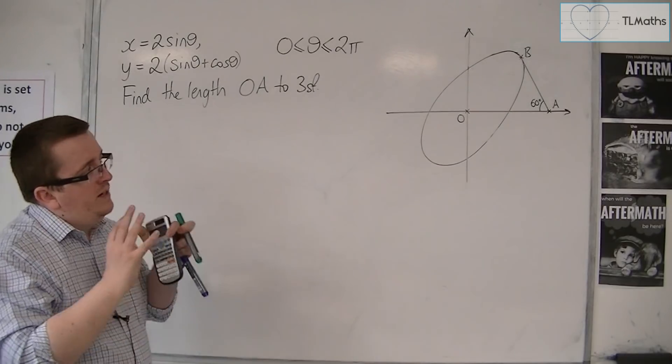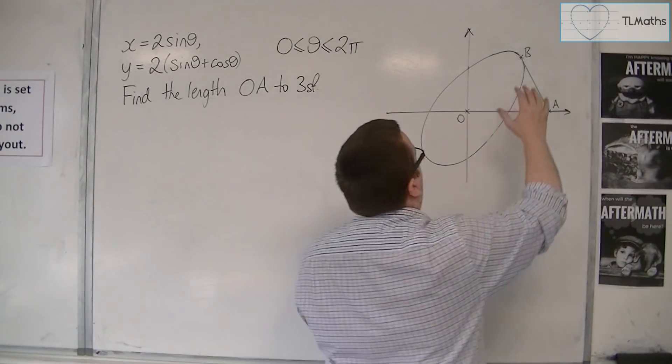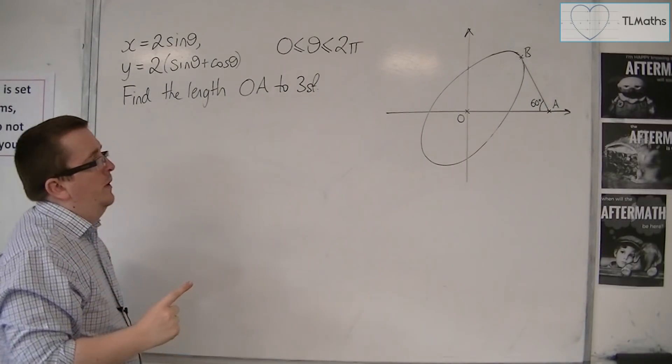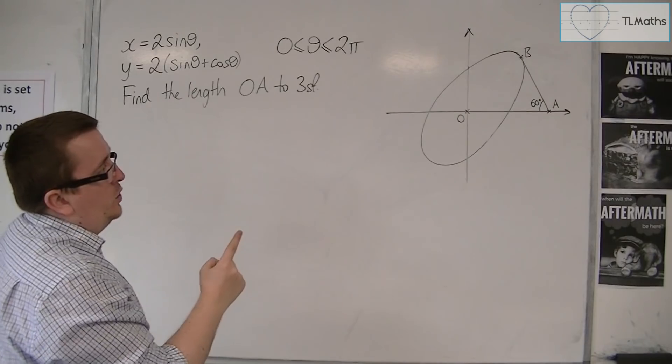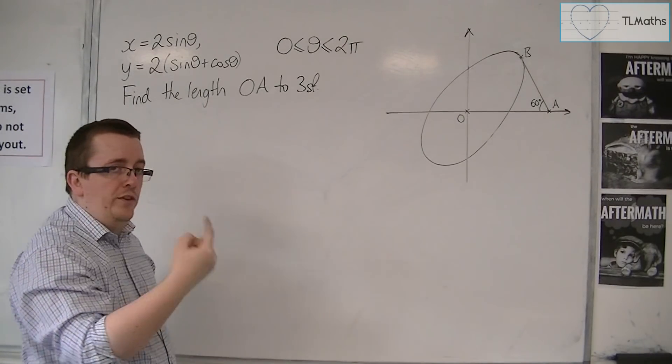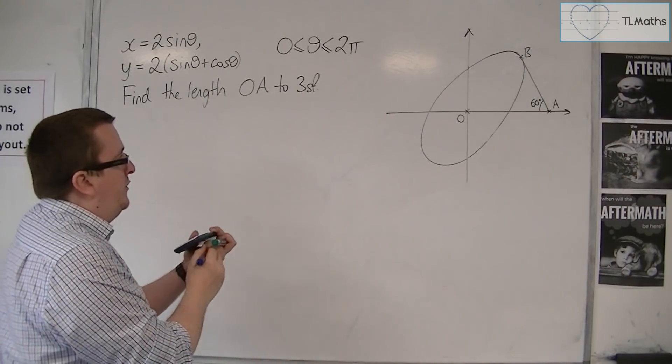The route I'm going to take is I need to find the coordinates of B first. In finding the coordinates of B, I can then work out the coordinates of A.